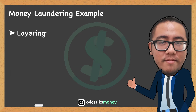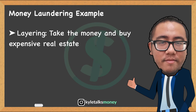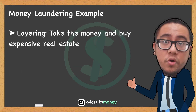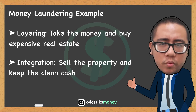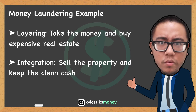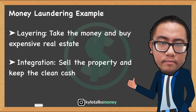Step two — layering: you take the money from your bank account to buy and sell luxury real estate. Then step three — integration: you sell your real estate and keep the clean cash. Your money is no longer dirty because it comes back to you through a legal transaction — the sale of a house.